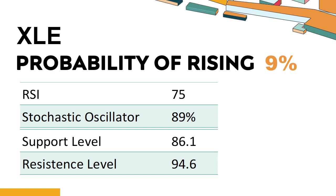When the stochastic oscillator rises above the 80 level, it is usually considered overbought, indicating that the stock may be due for a price pullback. An overbought condition occurs when a stock's price rises too fast and too high in a short period of time, and can be a sign that buying pressure has exhausted.